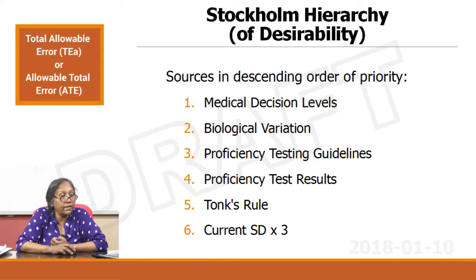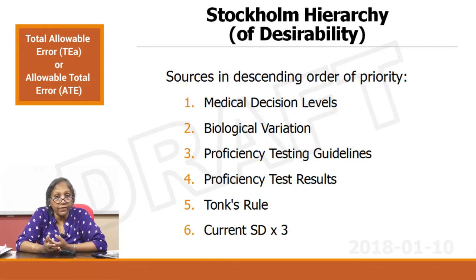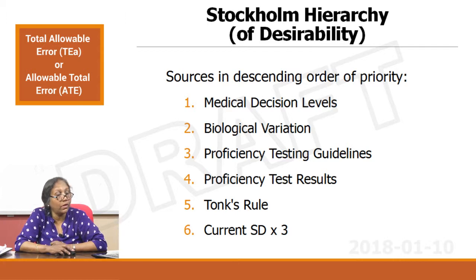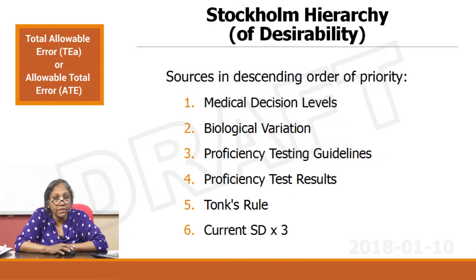Third: proficiency testing guidelines and proficiency test results. Fourth: Tong's rule. And finally, current SD times 3. If you have the TEa defined in the medical decision levels, go for it — that should be your TEa. If not, you come to the second option. TEa is not defined for all parameters under these categories, so you may have to look at the next option, and if you do not find any, finally you have to settle for your current standard deviation times 3. Please look at the availability of TEa values in recommended sites — the biological variation database is available online.